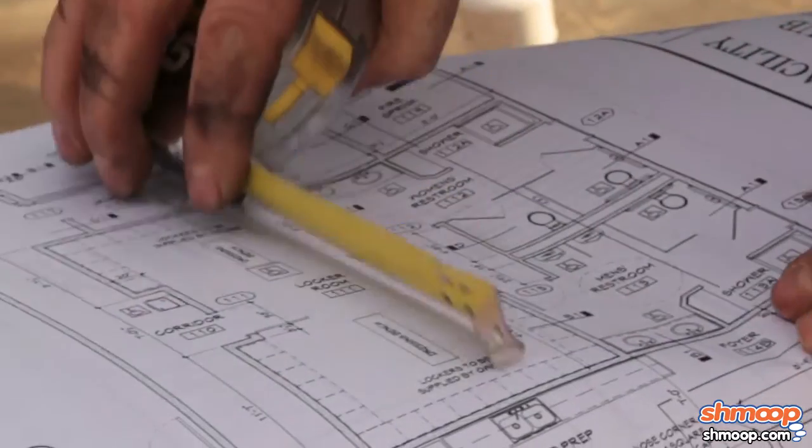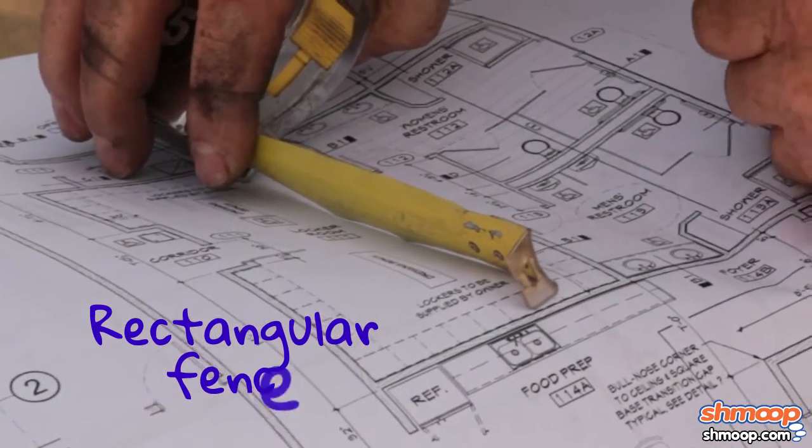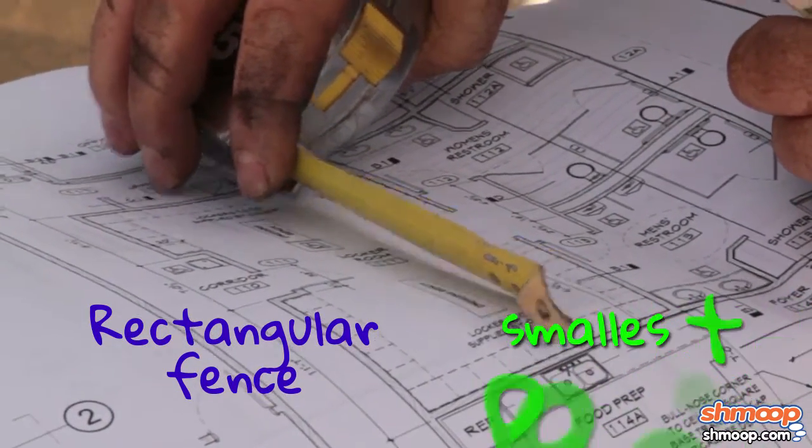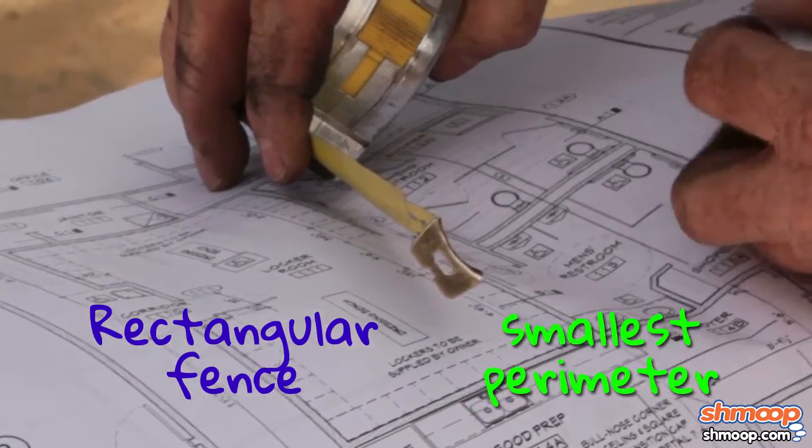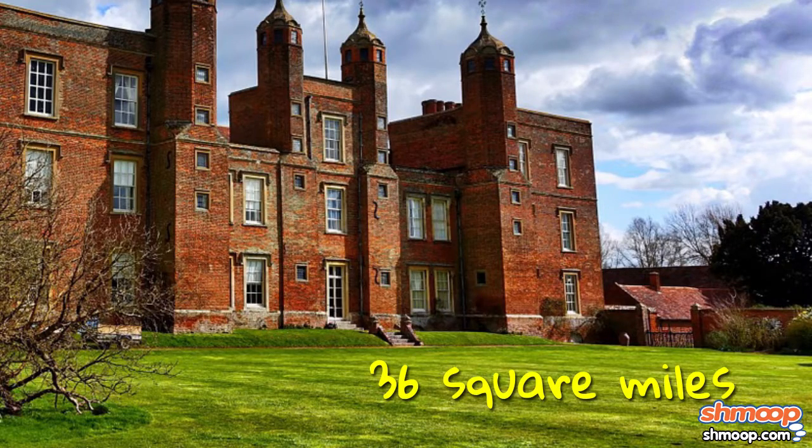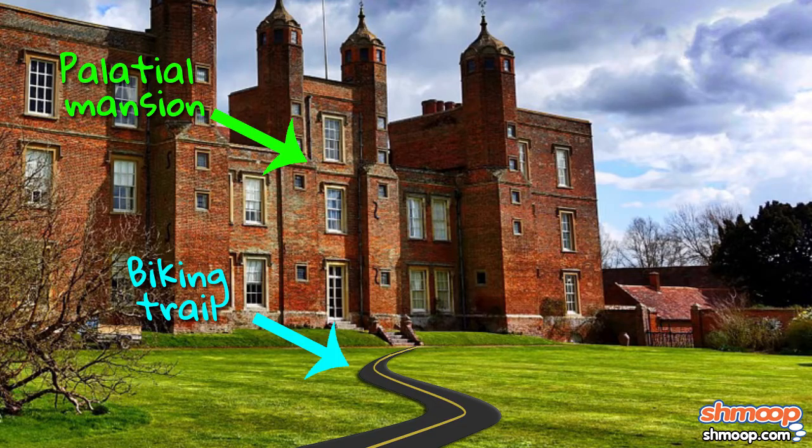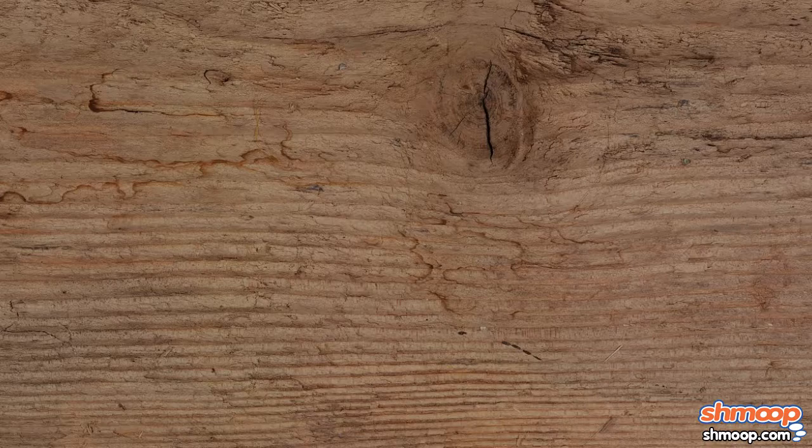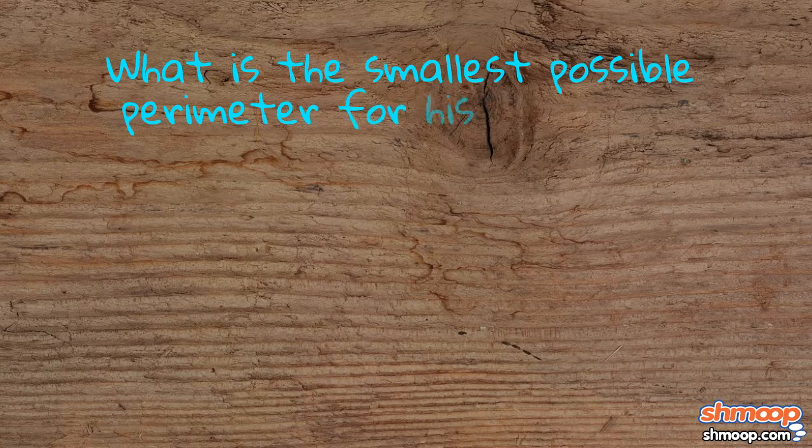Which means he needs to know how to build a rectangular fence around his compound with the smallest possible perimeter. Lance knows that he needs at least 36 square miles of land for his palatial mansion, biking trails and factory of lies. What is the smallest possible perimeter for his rectangle?